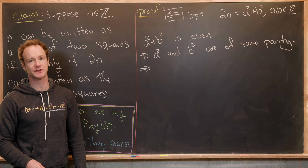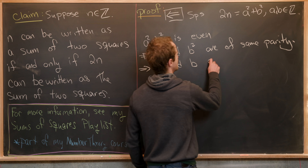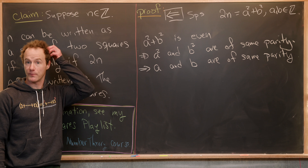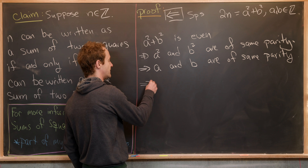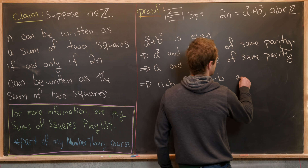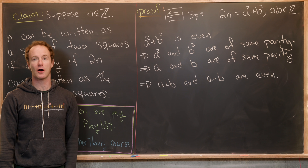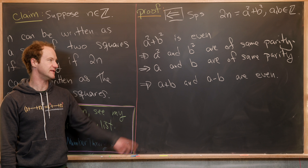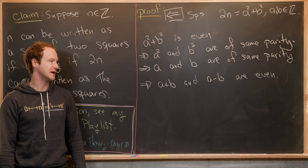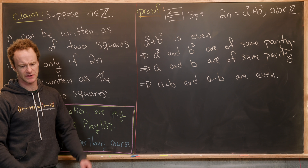If a squared and b squared are of the same parity, then a and b are also of the same parity — a standard result. So a and b are either both even or both odd. That tells us that a plus b and a minus b are both even: the sum and difference of two even numbers are even, and the sum and difference of two odd numbers are also even.